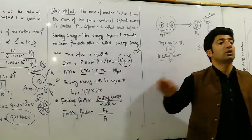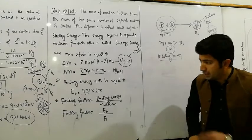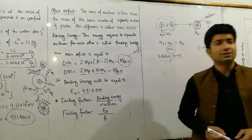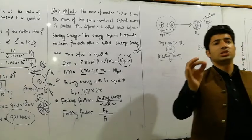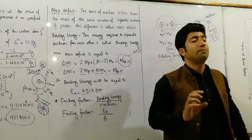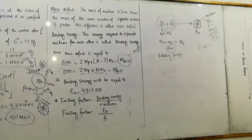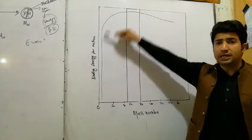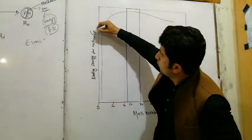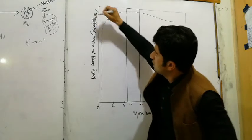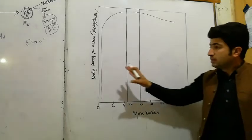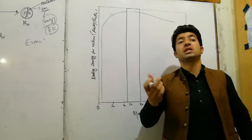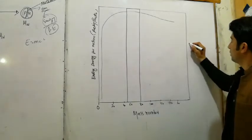Now, packing fraction is defined as binding energy per mass number. So packing fraction equals binding energy divided by mass number. The packing fraction indicates nucleus stability.